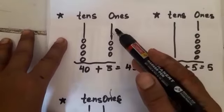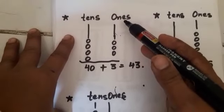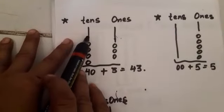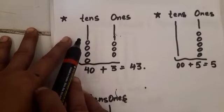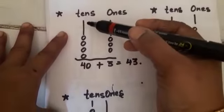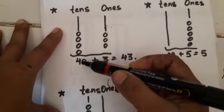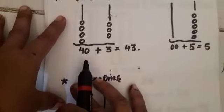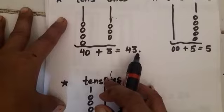So, the right side of the spike denotes ones place and the left side of the spike denotes tens place. In ones place 3 bits and in tens place 4 bits. So, how we will write: 40 plus 3 is equal to 43.